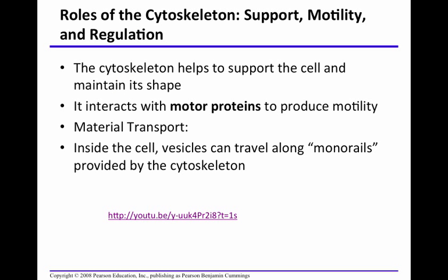What is the role of the cytoskeleton? It plays three major roles: support, motility, and regulation. It helps to support the cell and maintain its shape. It interacts with motor proteins to produce motility — including flagella and cilia. For material transport, vesicles travel along monorails provided by the cytoskeleton.